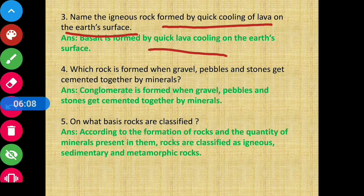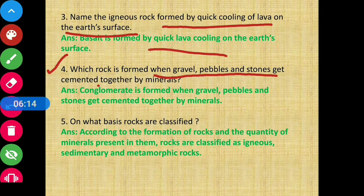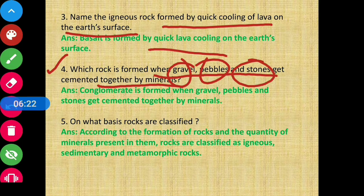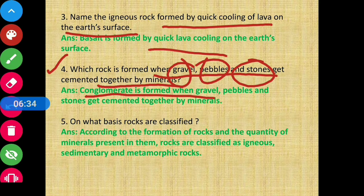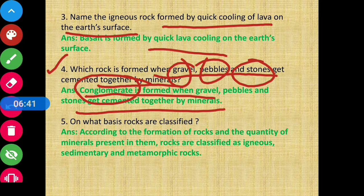Question 4: Which rock is formed when gravel, pebbles and stones get cemented together by minerals? Which rock is formed when gravel, pebbles and stones are cemented together with the help of minerals? That is conglomerate — conglomerate is formed when gravel, pebbles and stones get cemented by minerals.